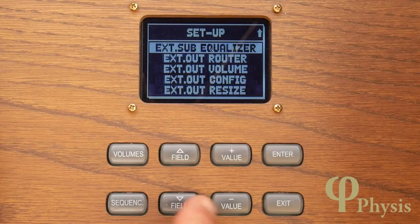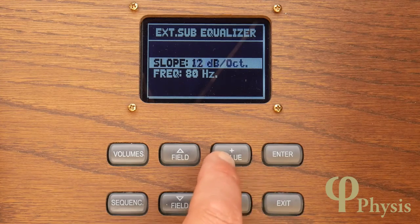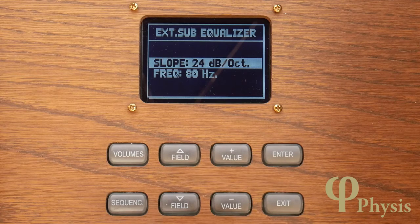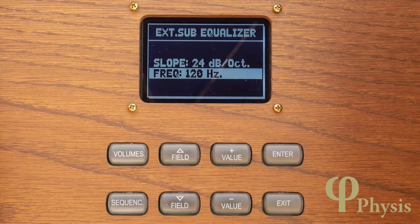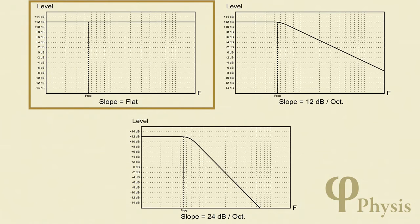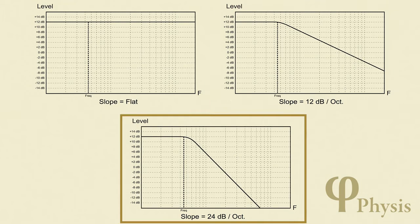If your sub doesn't have built-in filtering, the organ's general output can be filtered instead. In the setup menu, scroll down one further to the external sub equalizer, where you can make the general output either flat — that is, unfiltered — or give it a slope of 12 or 24 dB per octave. You can also alter the turnover frequency of the filter, which determines the point where the subwoofer output begins to roll off. The flat curve would typically be used if you're connecting a sub that does its own filtering or using the general output to feed a separate reverb unit, while the two filtered versions are for feeding a sub without its own filtering — the steeper curve making for a sharper roll-off of high frequencies.